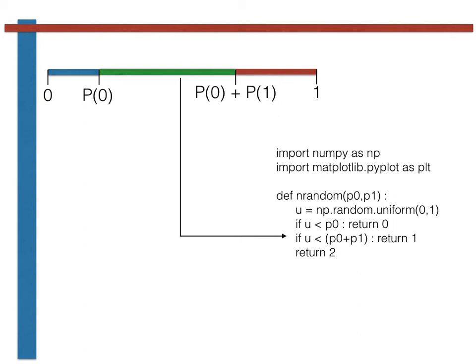We can thus safely terminate the execution of our function at this point and return a value of 1 if this second condition, that u is less than P0 plus P1, is satisfied.